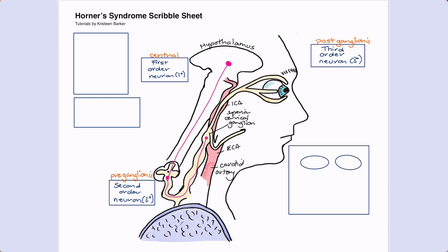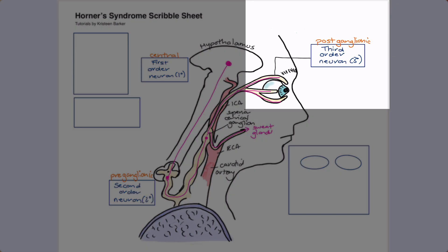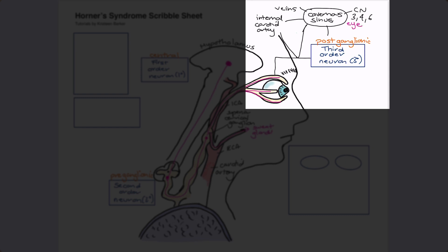Leaving this ganglion are the third order neurons, which have a choice of two possible paths. Some will branch off to innervate the sweat glands on that side of the face, and others will branch off to innervate the eyeball. Those destined for the eyeballs will travel alongside the internal carotid artery through the cavernous sinus, which contains veins, the internal carotid artery, this third order neuron, and cranial nerves 3, 4, and 6 — basically the eyeball movement nerves.